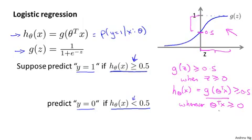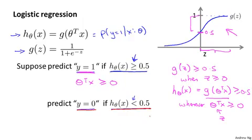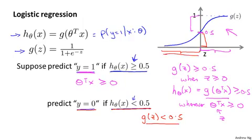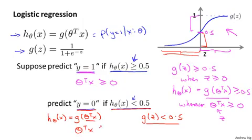So what we've shown is that our hypothesis is going to predict y equals 1 whenever theta transpose x is greater than or equal to 0, because theta transpose x takes the role of z. Let's now consider the other case of when our hypothesis will predict y is equal to 0. By a similar argument, h of x is going to be less than 0.5 whenever g of z is less than 0.5, which is when z is negative. So when g of z is less than 0.5, our hypothesis will predict y equals 0 — and that happens whenever theta transpose x is less than 0.